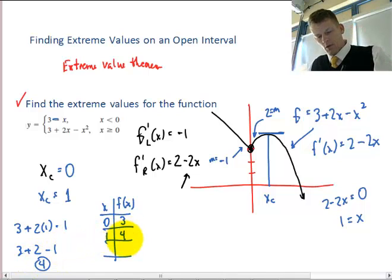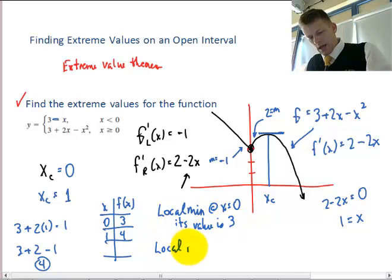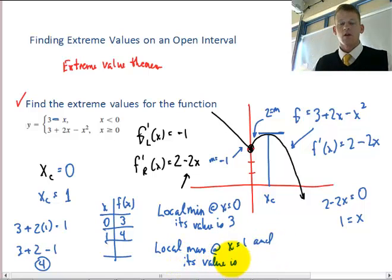So you can see here that I have found my extreme values, I have a local min at x equals 0, and its value is 3, and I have a local max at x equals 1, and its value is 4.